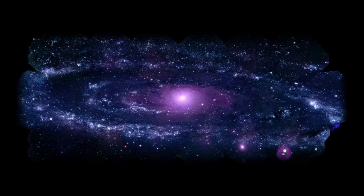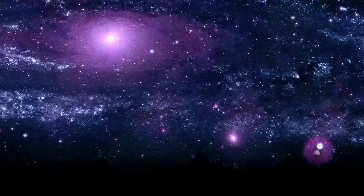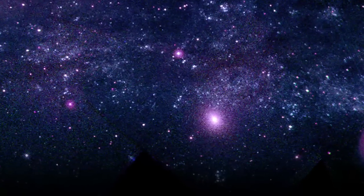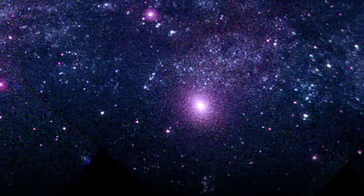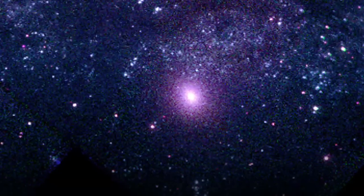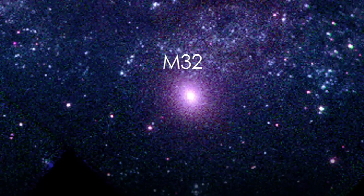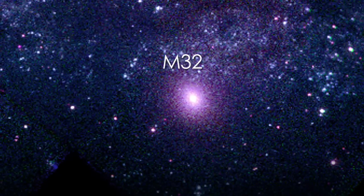Speaking of which, this is M32, one of many dwarf galaxies orbiting M31. These galaxies are usually not very bright in the ultraviolet because they lack young stars. But M32's core is so bright in the UV because it likely contains many blue and old stars.